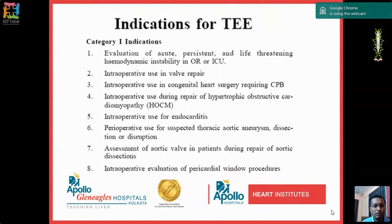Category 1 indications for TEE include: evaluation of acute persistent life-threatening hemodynamic instability intraoperatively or in the ICU; intraoperative use in valve repair; congenital heart surgery requiring cardiopulmonary bypass; repair of HOCM; suspected thoracic aortic aneurysm, dissection, or disruption; assessment during aortic valve repair; and intraoperative evaluation of pericardial window procedures.